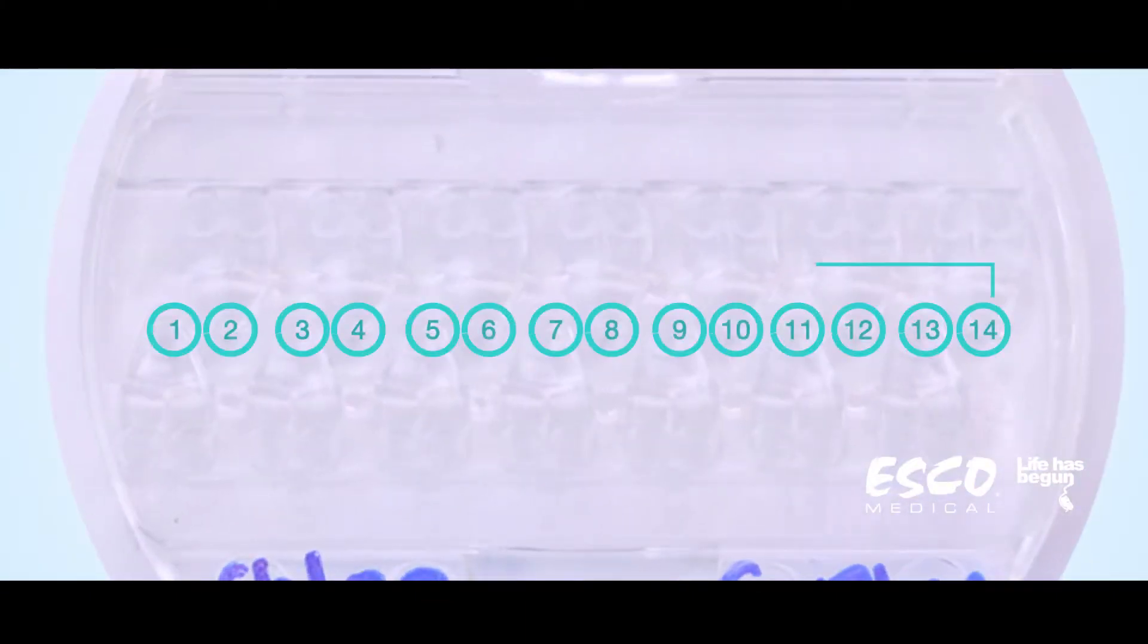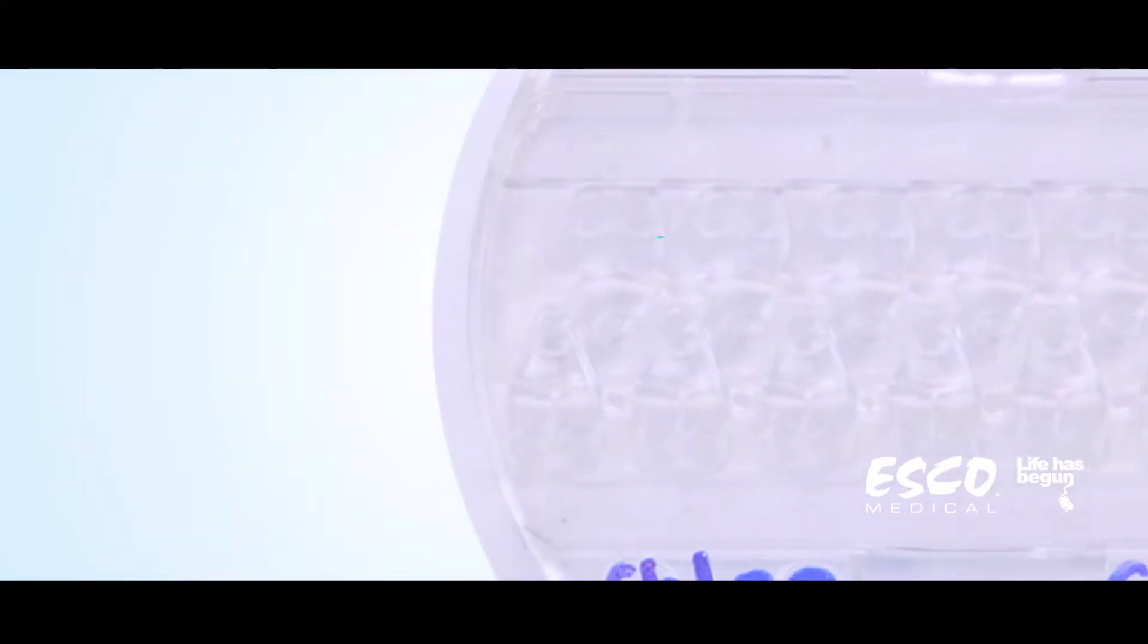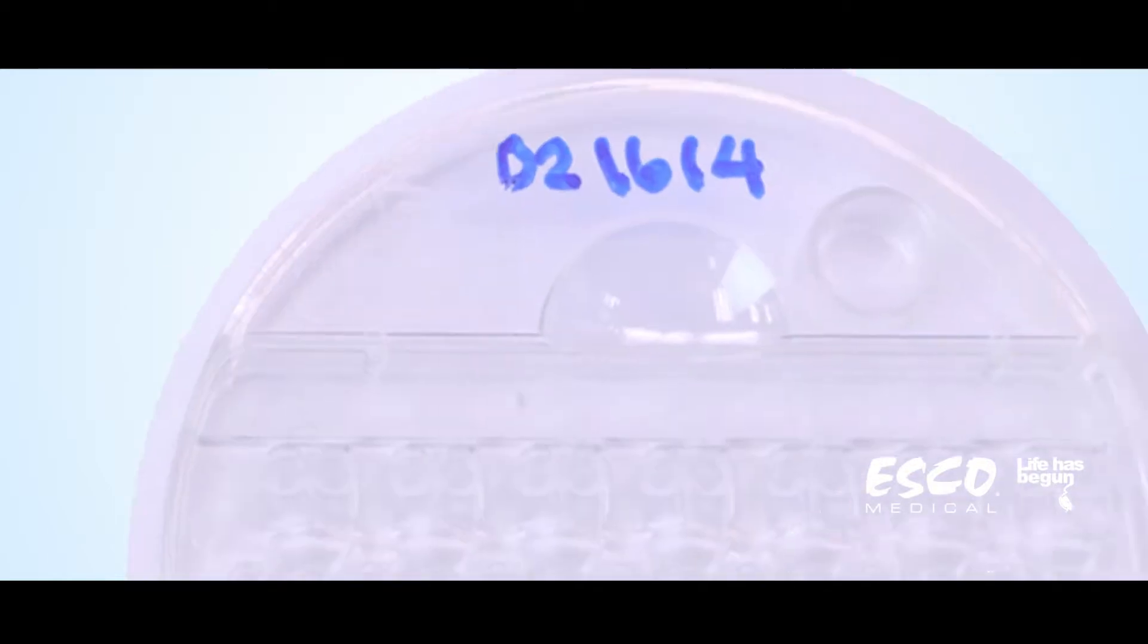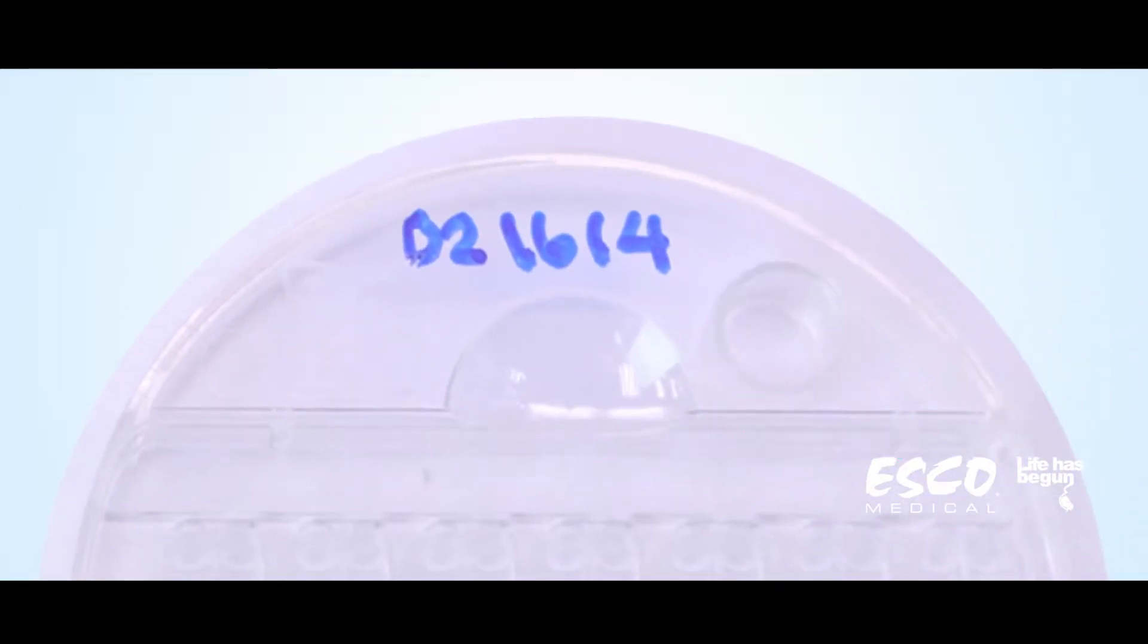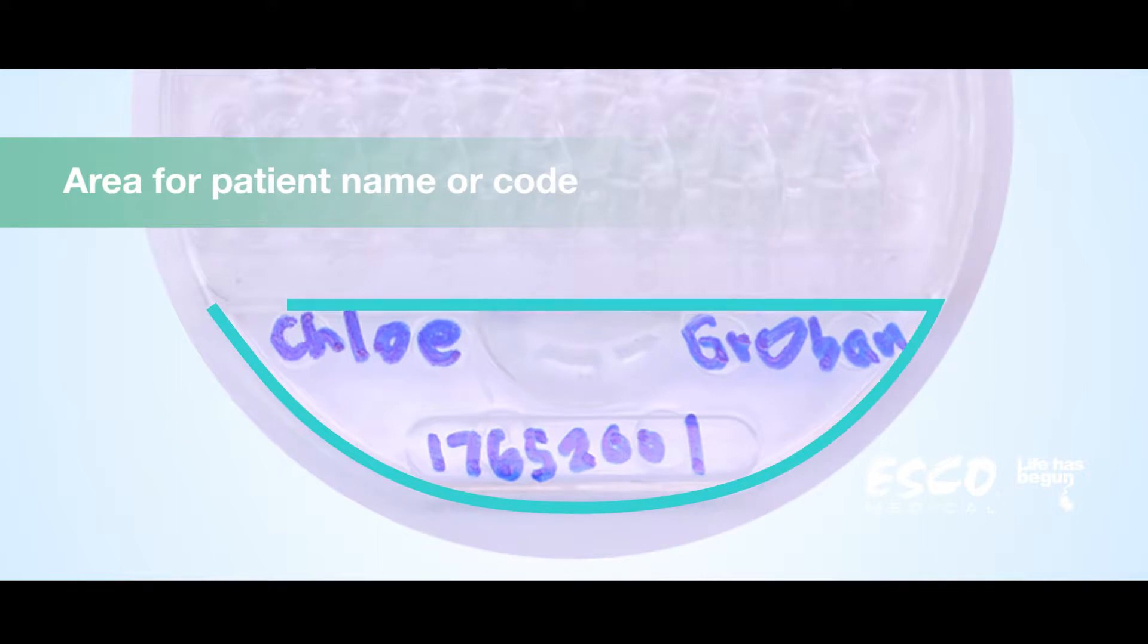The culture coin has 14 culture wells, 2 wells for embryo washing for each culture well, and a pH reservoir for pH measurement. It also has an area where you can write the patient name or code.